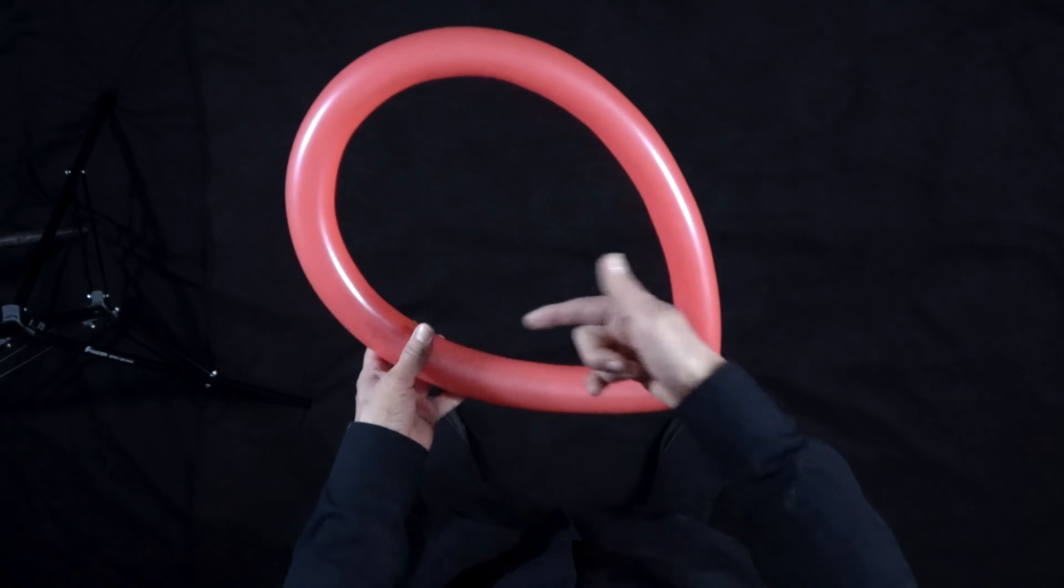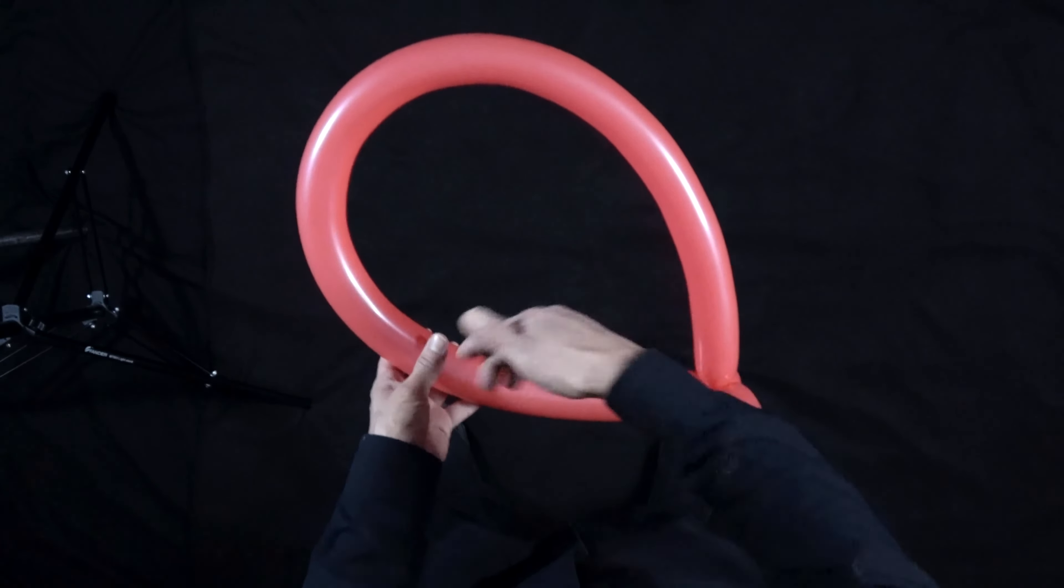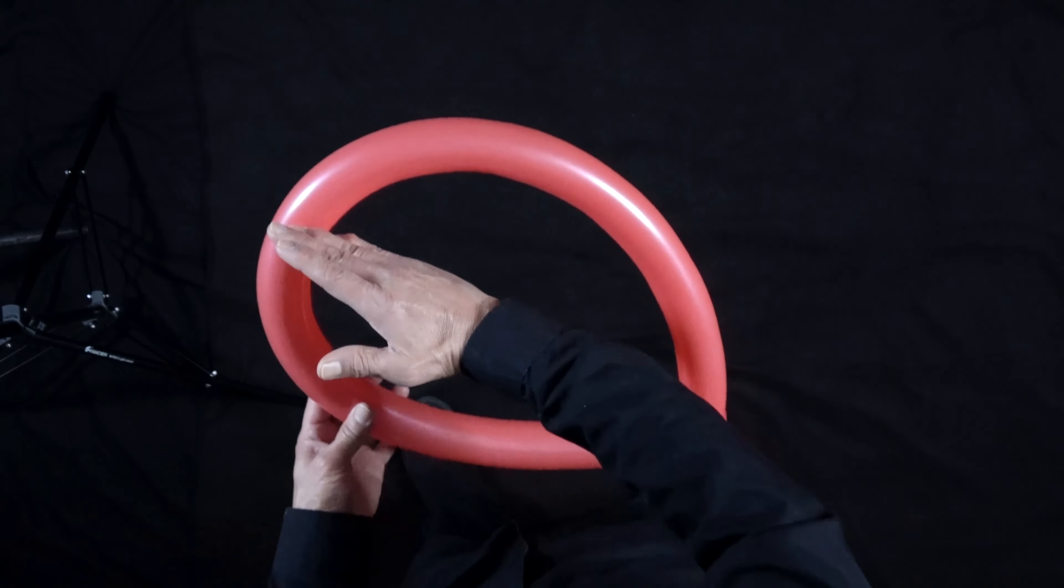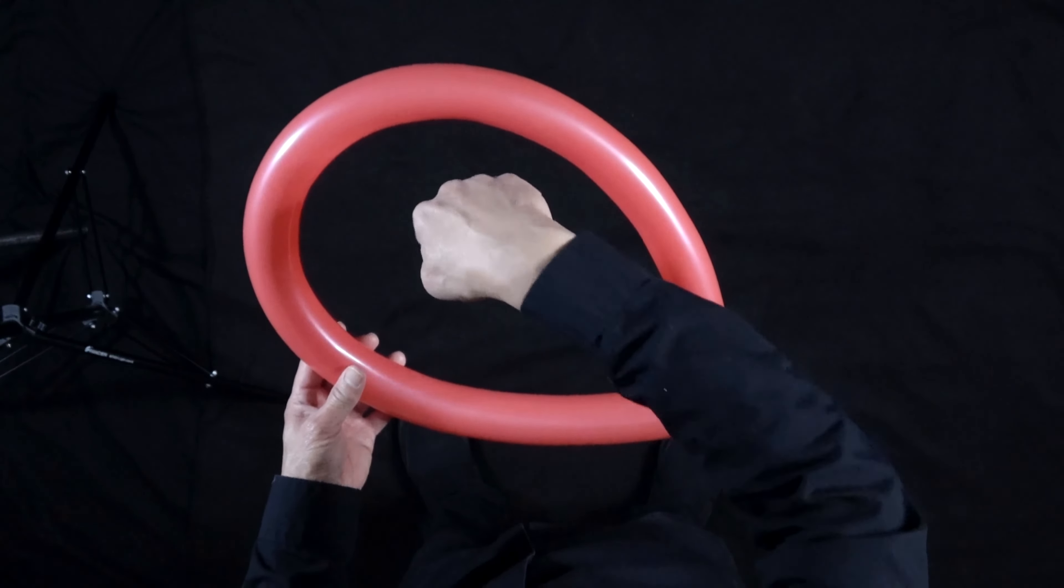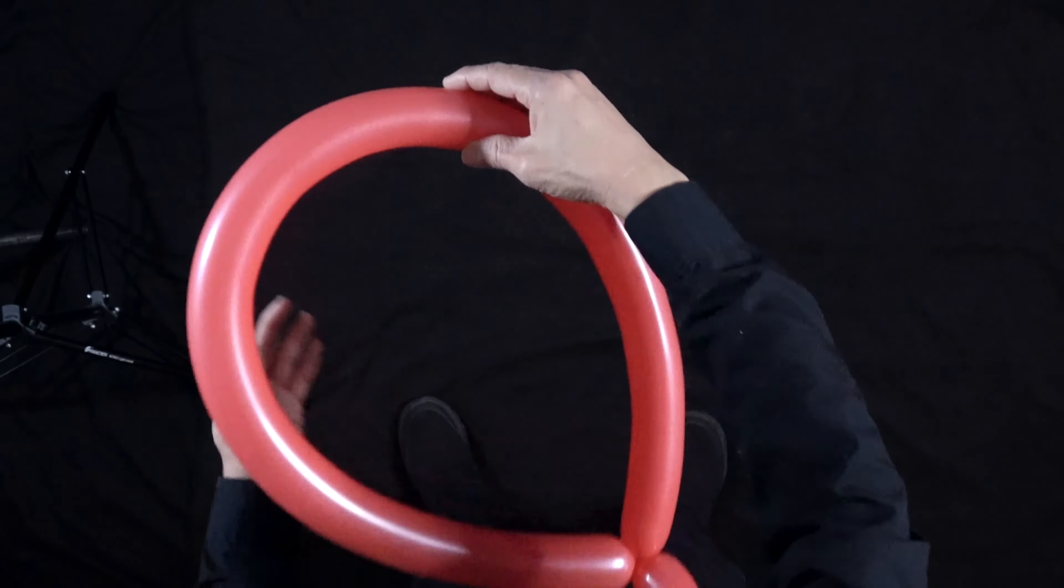Now you have to form your loop here into a heart. So what you do is you start from here, find the midpoint, and then you're going to push all this down and I'll give you some tips on how to do that.